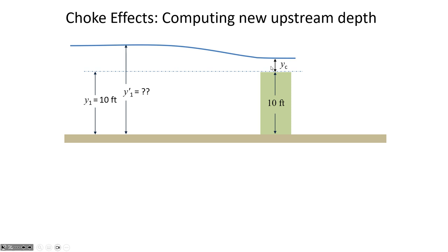The water flows at the critical depth because that's the depth associated with minimum specific energy — it requires the least amount of energy. The pooling upstream causes the water to get deeper and deeper until just the bare minimum energy is reached. It stops rising when there's just enough energy to get over the obstacle, and at that point equilibrium is restored: flow into the control volume equals flow out. It flows at Y_c because that is the most efficient flow depth to convey the required flow.